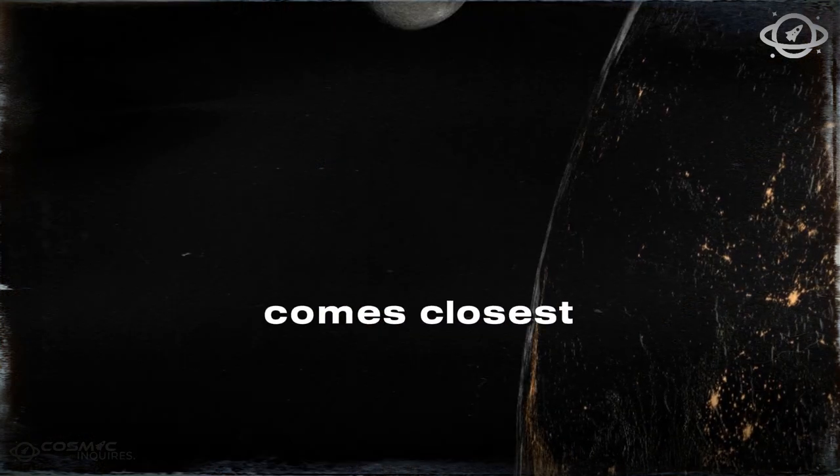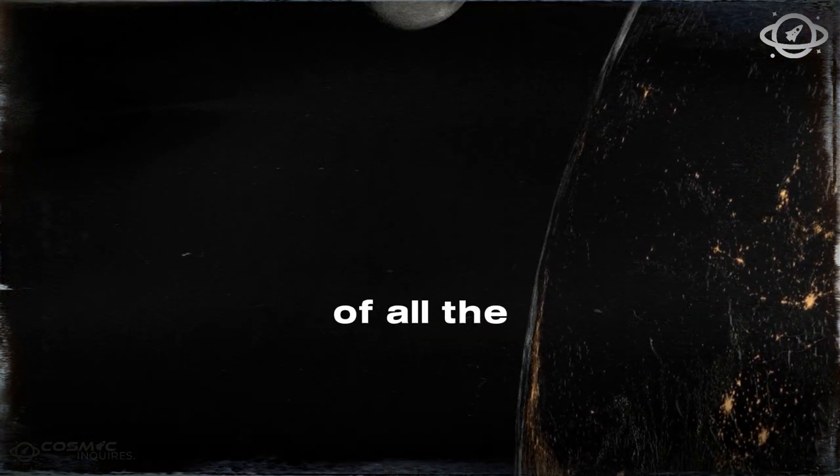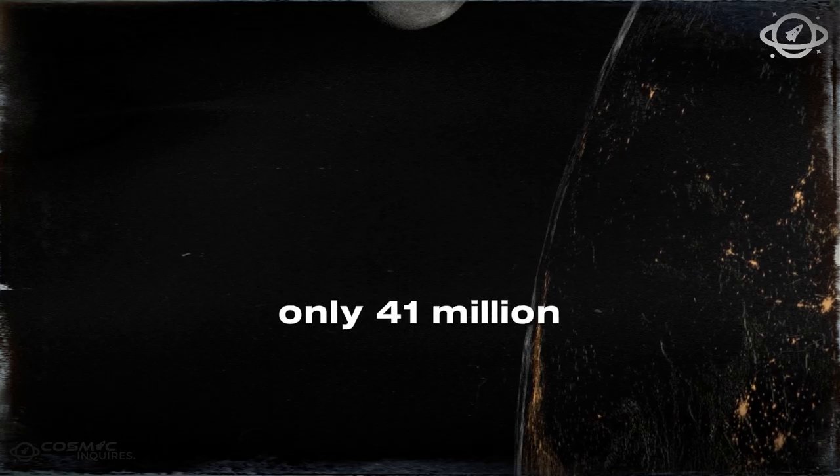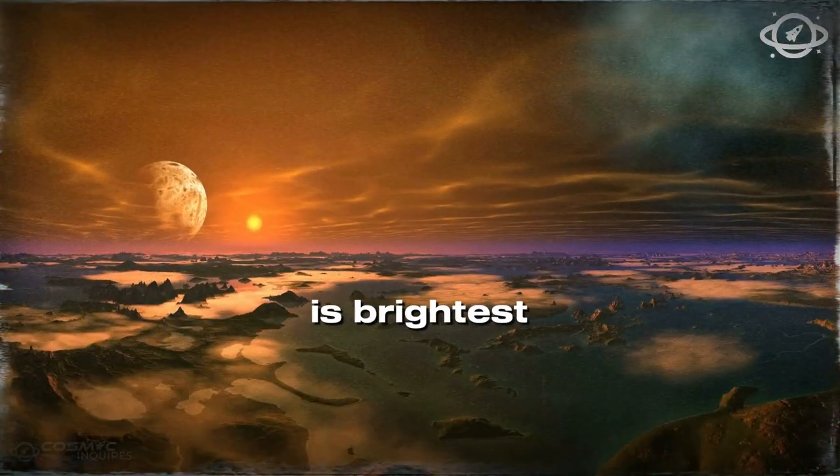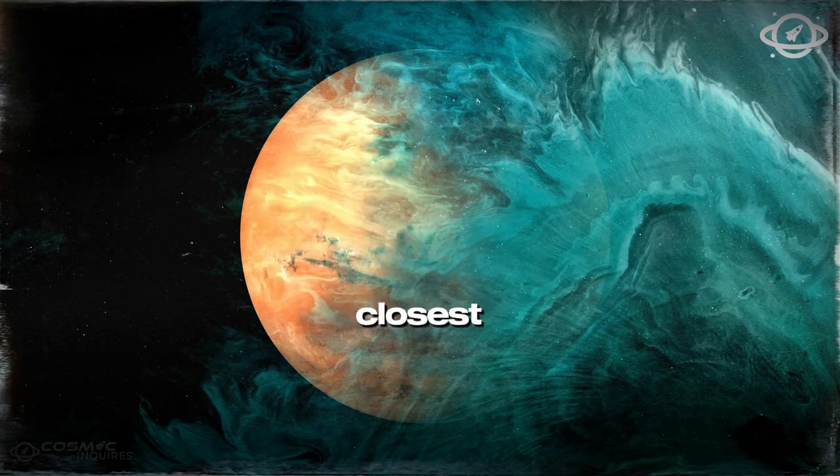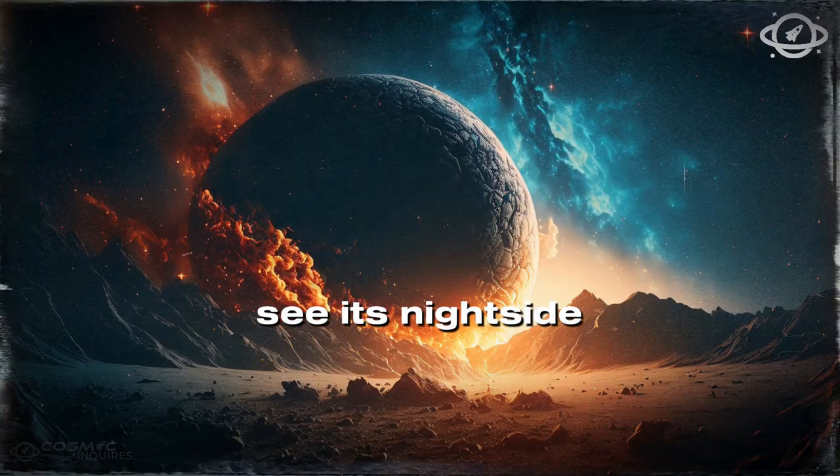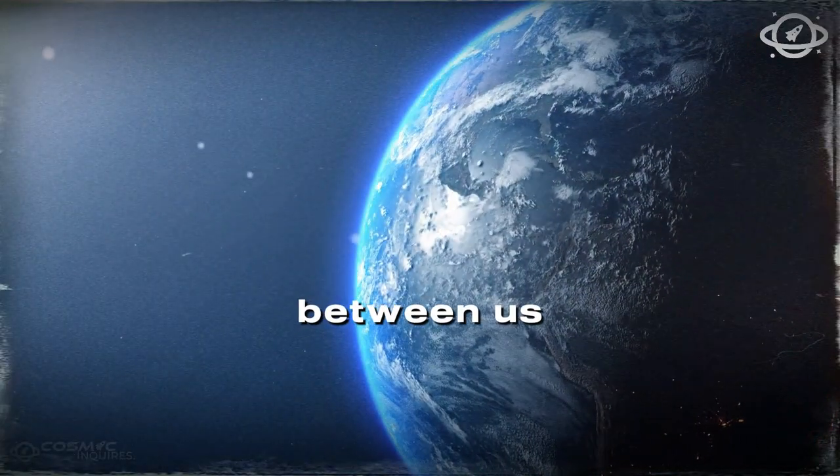When Venus comes closest to Earth, it's the nearest of all the planets, only 41 million kilometers away. Interestingly, this isn't when Venus is brightest in our sky. When it's closest, we mostly see its night side, as it's positioned between us and the Sun.